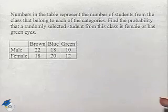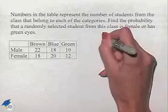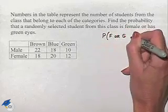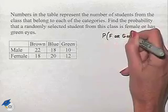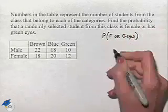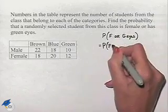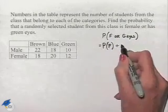So we're going to be looking for the probability that we select someone that is female or who has green eyes. We can evaluate that by taking the probability that we select someone who's female plus the probability that we select someone with green eyes.